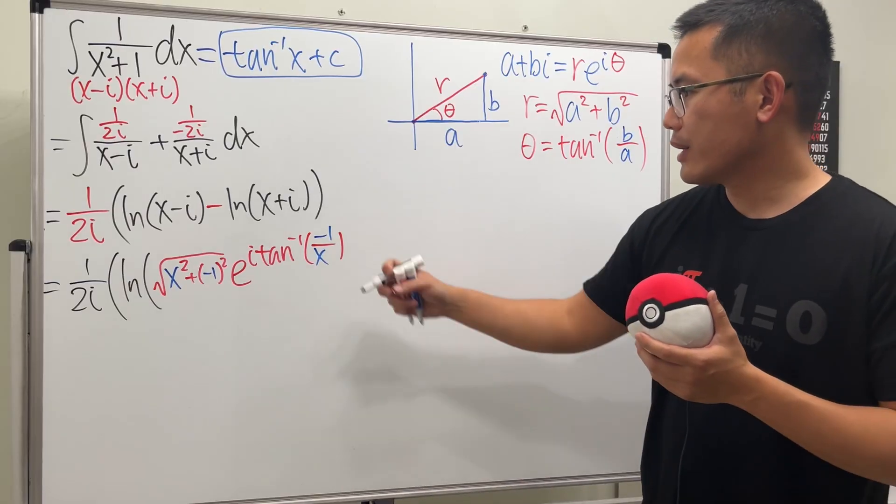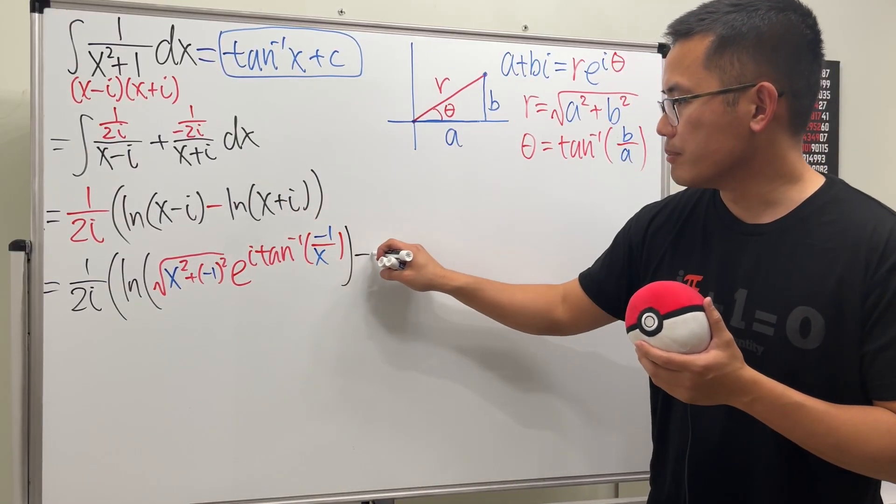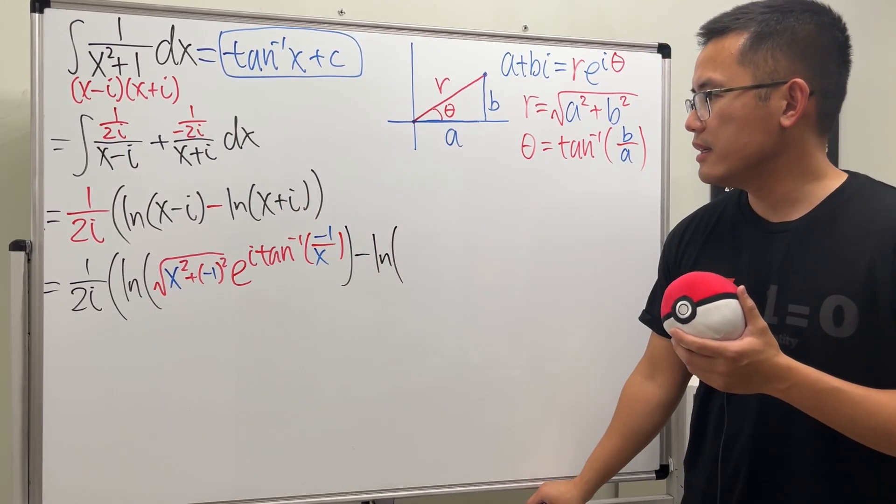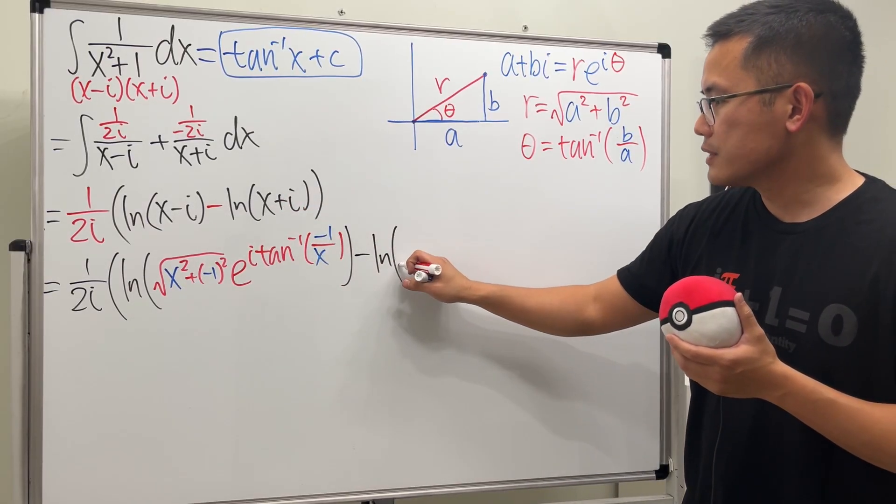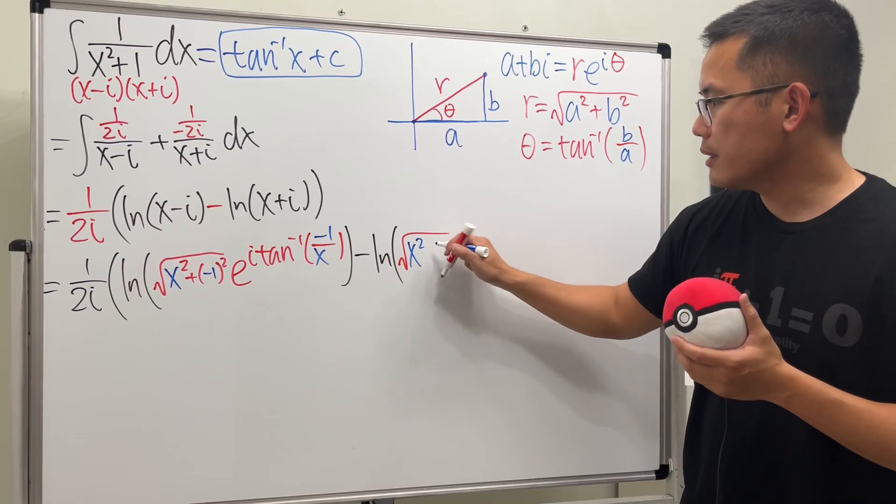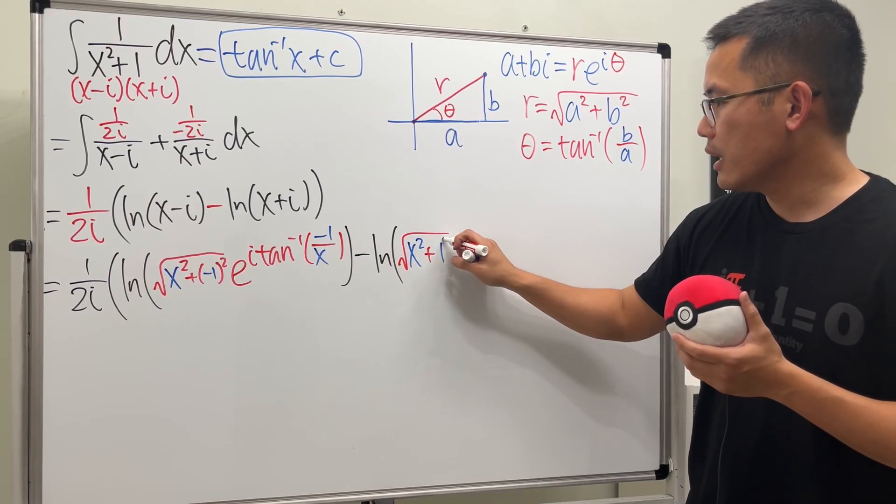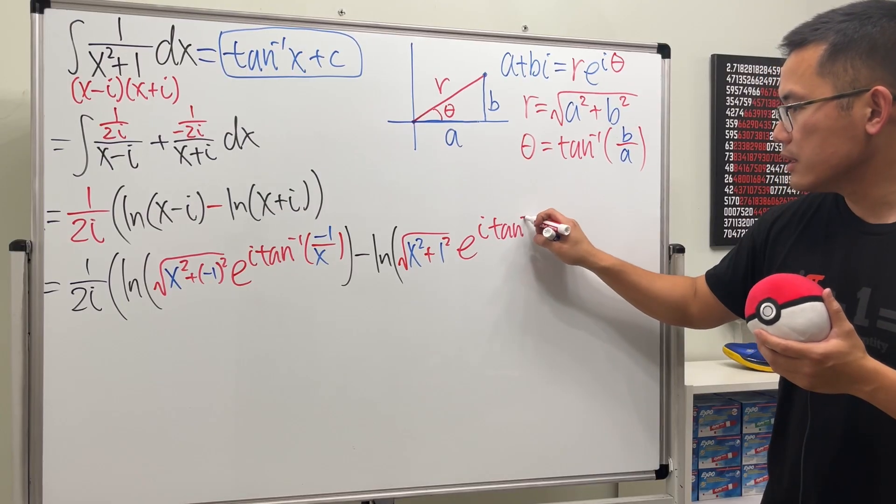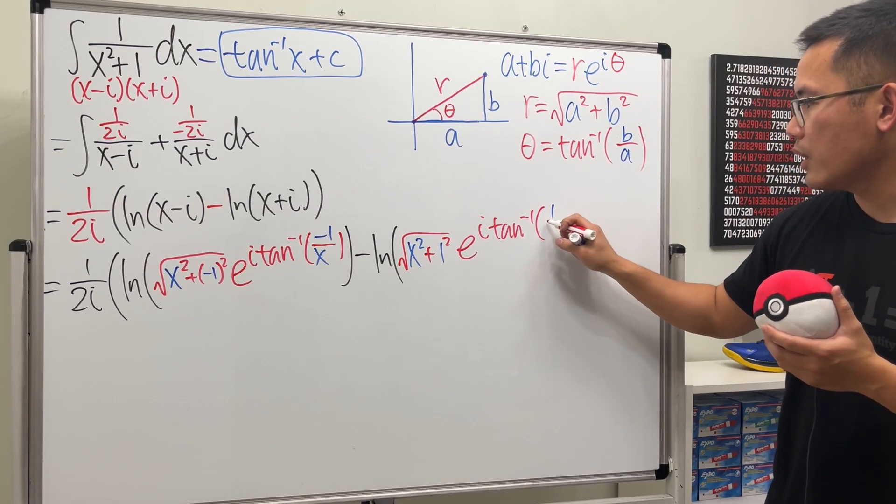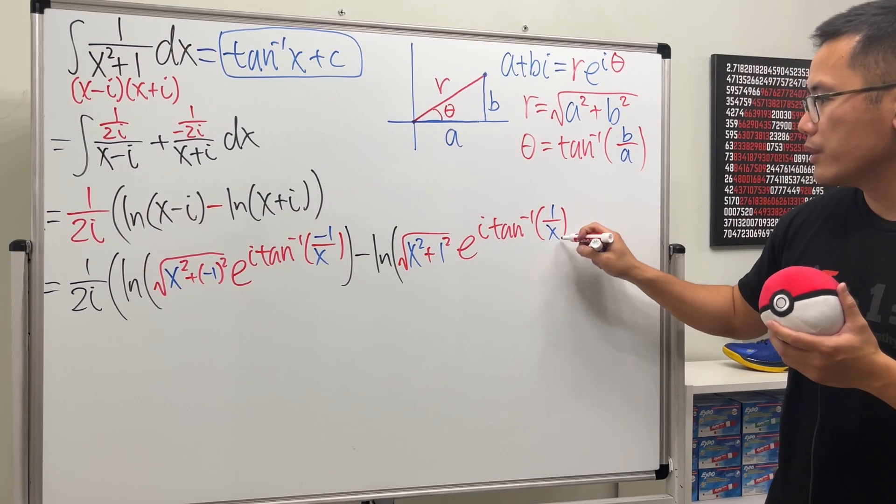And then we are going to subtract the second part, so minus ln, and then here it's pretty much the same thing, but b here is positive 1. So we have square root x squared plus 1 squared, and then times e to the i, theta is inverse tangent, and then we have positive 1 over x. Cool. All right.